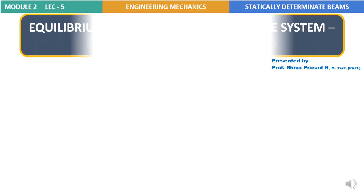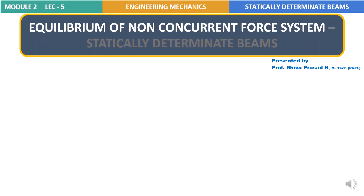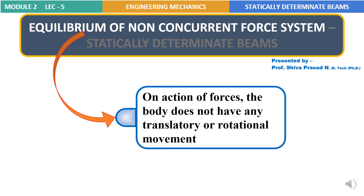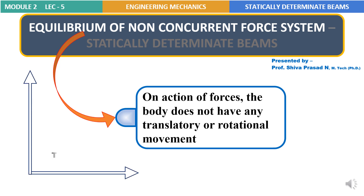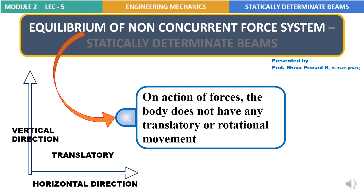Next, let's look into what exactly we mean by equilibrium of a non-concurrent force system. It means on the action of a number of forces on a body, the body does not show any type of movement. The movement may be either translatory or rotational in nature. Translatory motion means movement of the body along the horizontal x direction and vertical y direction.